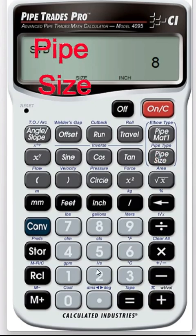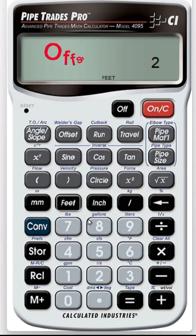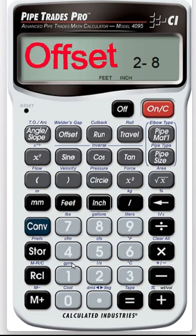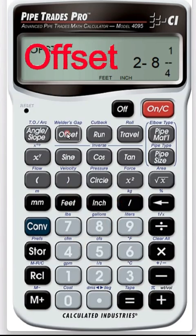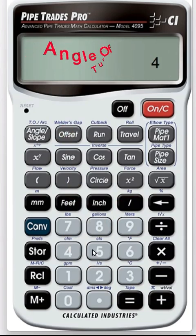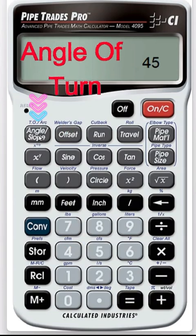Our offset was 2 foot 8 and a quarter, 2 foot 8 inch, 1 quarter. Put that in as the offset. Tell it it's 45 as the angle slope. Press angle slope.